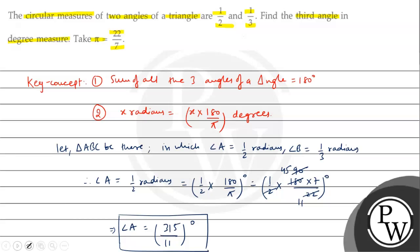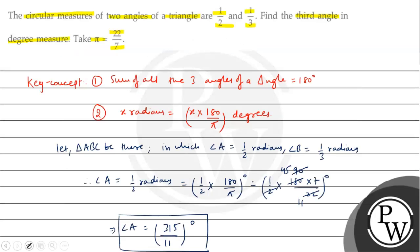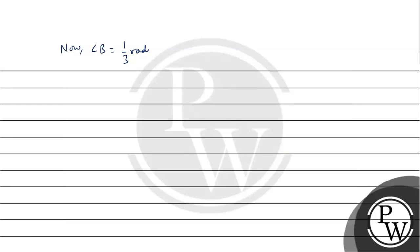Now, let's remove angle B. You can see, now, angle B will be, angle B is how many radians? It is 1 upon 3 radians. So, 1 upon 3 into 180 upon pi degrees.